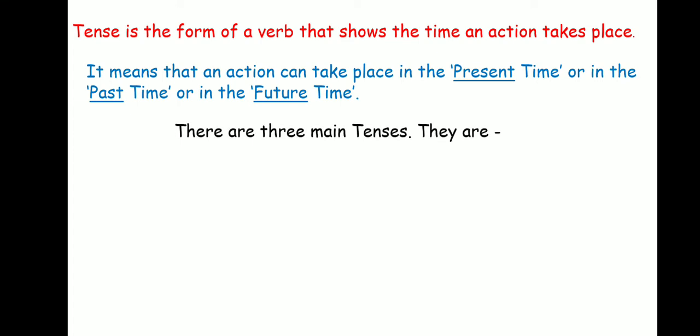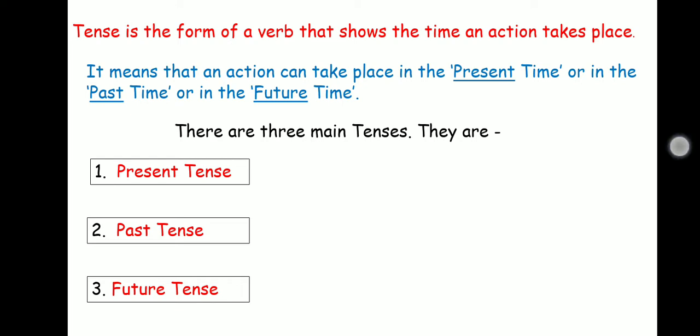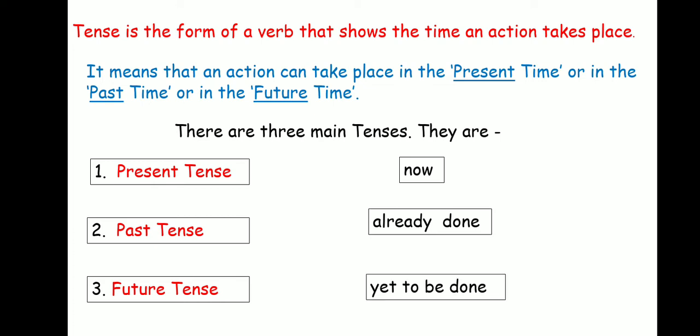There are three main tenses: present tense, past tense, and future tense. The present tense is the action that takes place now — right now, what is happening. Past tense is the action that is already done; it's finished, it's completed. And the future tense is the action that is yet to be done.